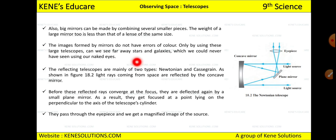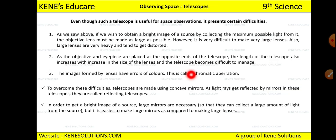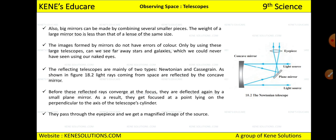The image formed by the mirror does not have errors of color — there is no chromatic aberration, unlike with lenses. Using large telescopes, we can see far-away stars and galaxies which we could never have seen with the naked eye. You can see stars, galaxies, and all the planets present in space.